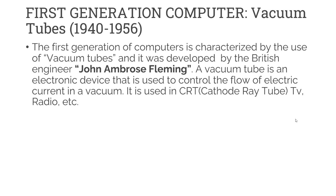First generation computers used vacuum tubes, developed by British engineer John Ambrose Fleming. A vacuum tube is an electronic device used to control the flow of electric current in a vacuum. It is used in CRTs (cathode ray tubes), in TVs, radios, etc. The electron gun inside the vacuum tube represented Boolean logic 1 if the electron passed through, and Boolean logic 0 if it did not. This was the basic working principle of first generation computers.